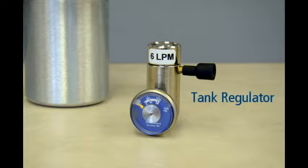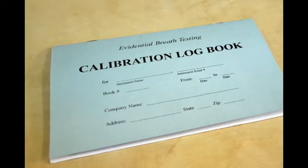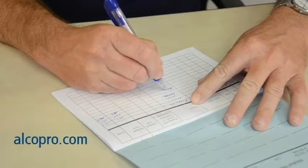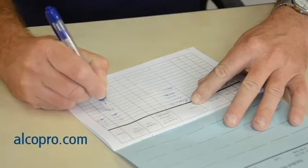You will also need a tank regulator to attach to your dry gas tank. It is a good idea to keep a logbook of accuracy checks and calibrations performed on your device. You can purchase an accuracy check calibration logbook at alkopro.com.